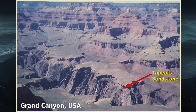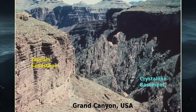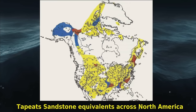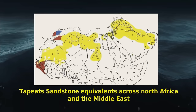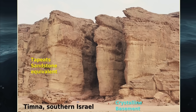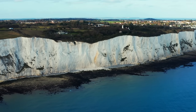The Tapeats Sandstone at the bottom of the Grand Canyon is the first layer of the flood — it sits on the erosion surface marking the beginning of the flood. We can trace that sandstone in outcrop and drill holes all the way across North America to Greenland. At Chippewa Falls in Wisconsin you see exactly the same sandstone with the same features sitting on exactly the same erosion surface and the same crystalline basement. The same sandstone can be traced right across North Africa to southern Israel near Timna — same sandstone, same fossils, same erosion surface, same crystalline basement.